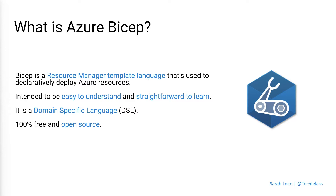Azure Bicep is a first-party product from Microsoft, but it is 100% free, so there's no charge for using it and it's also open source. You can go and grab the source code from GitHub, contribute to it, add in features, and help the team build on this tool set. It's great to see Microsoft leaning more towards the open source community with some of their tools.